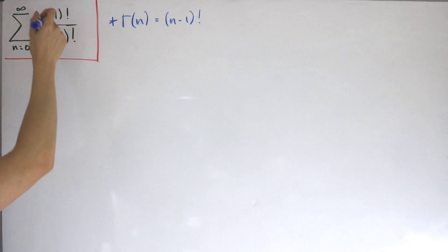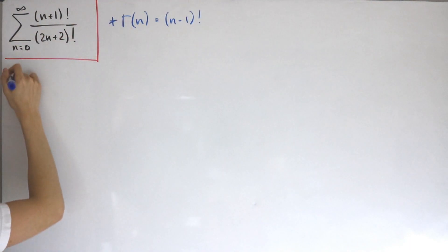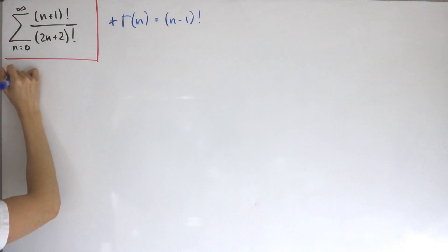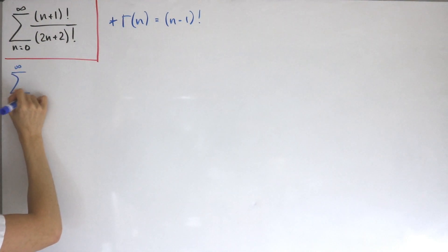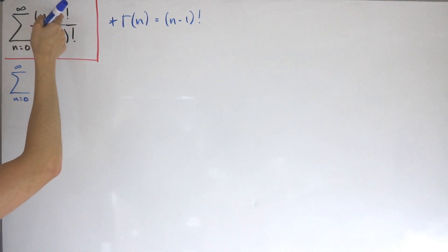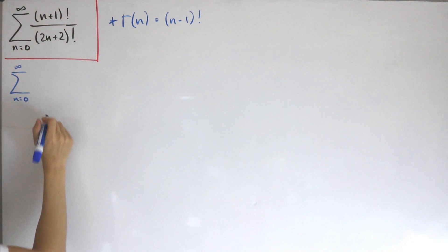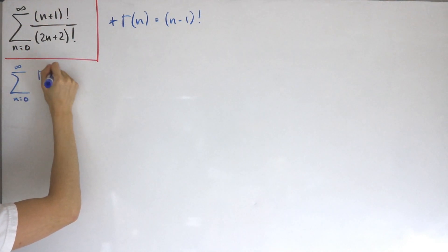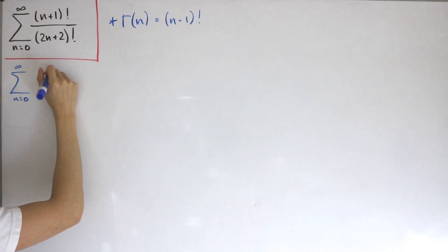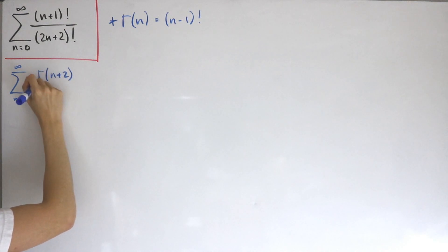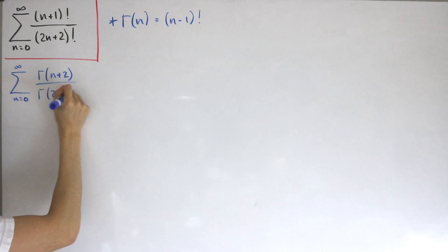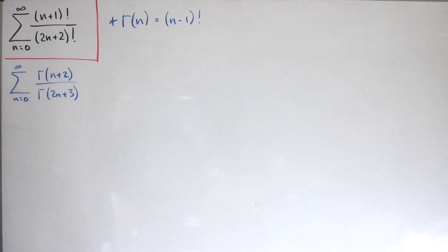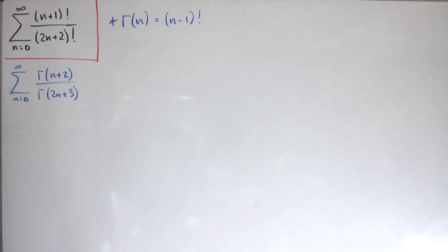With this in mind, we can replace our entire infinite sum with the gamma function. So the sum from n=0 to infinity: (n+1)! becomes Γ(n+2) in the numerator, and (2n+2)! becomes Γ(2n+3) in the denominator.